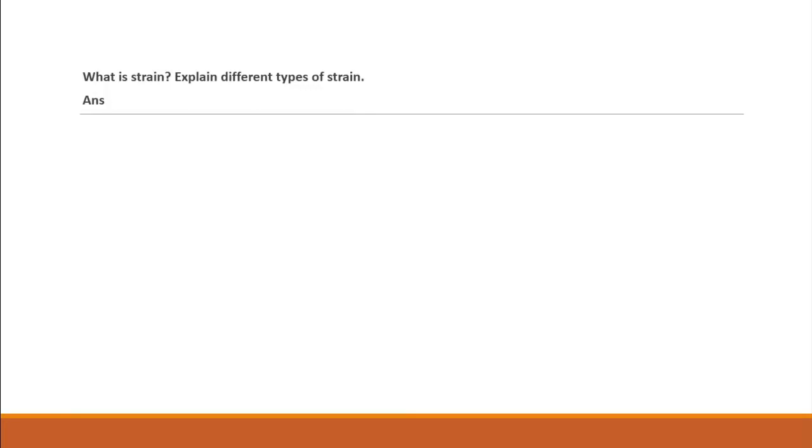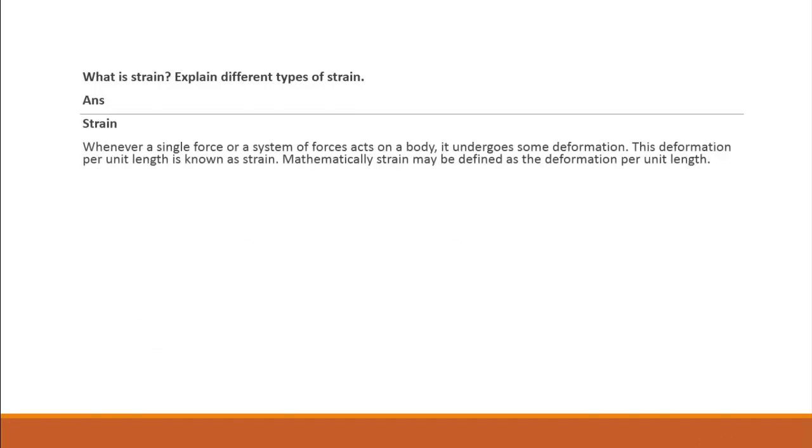Now what is strain and explain different types of strain. Strain is defined as the deformation per unit length. Strain equals ΔL divided by L, where ΔL is the change of length of the body and L equals original length of the body.